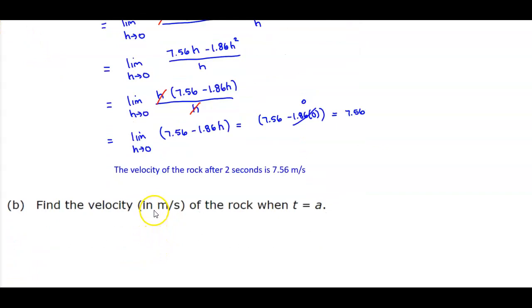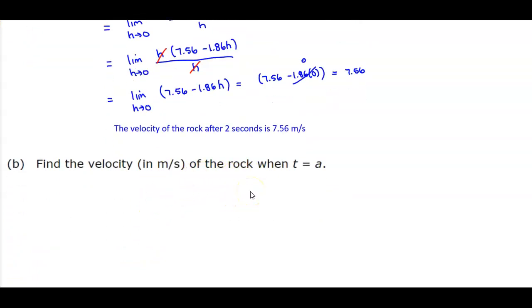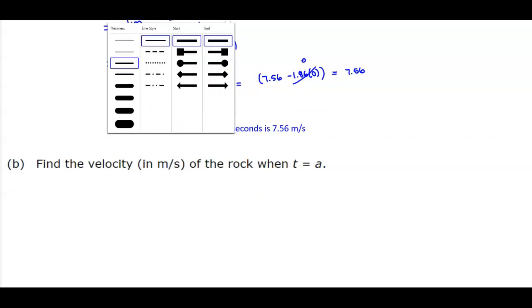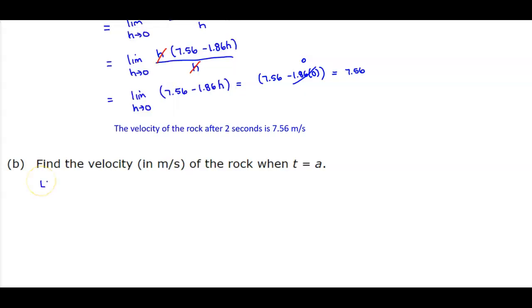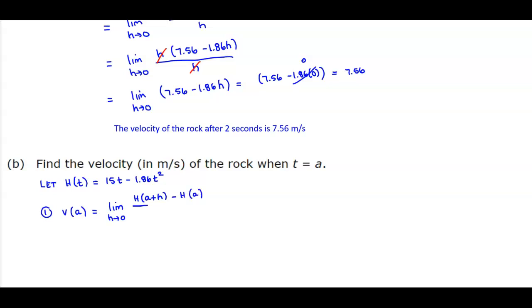Part B: find the velocity in meters per second of the rock when t is equal to a. Just like above, we let h of t equal 15t minus 1.86t squared, and we want to find the limit as h approaches 0 of h of (a plus h) minus h of a, all over h.